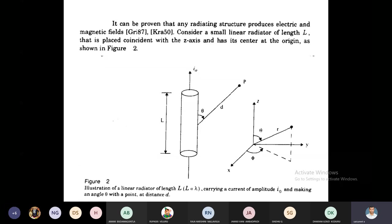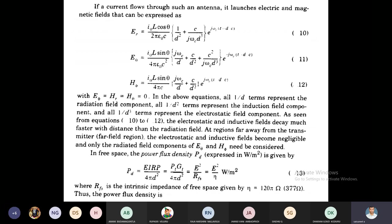ER, Eθ, Hφ. Similarly, whenever HR equal to Hθ, which is equal to Eφ, which is equal to zero. You know the concept of electromagnetic fields based upon electromagnetic theory. From this picture, the current flows through the antenna which launches electric and magnetic fields. That is, ER, Eθ, Hφ. Similarly, HR, Hθ, Eφ, which is equal to zero.